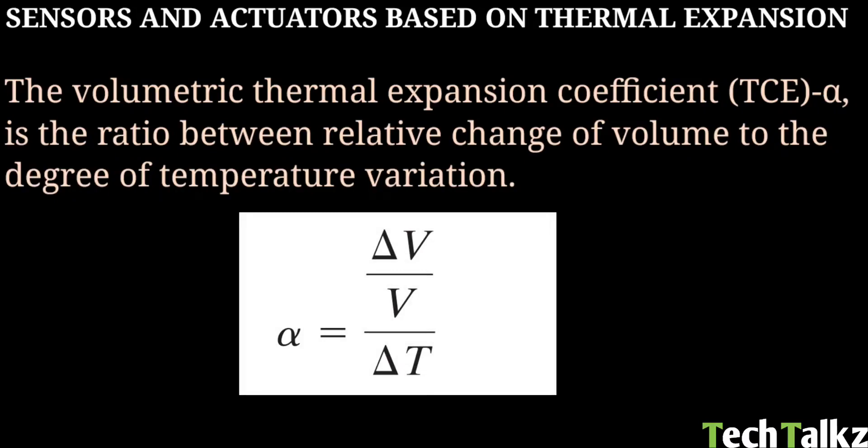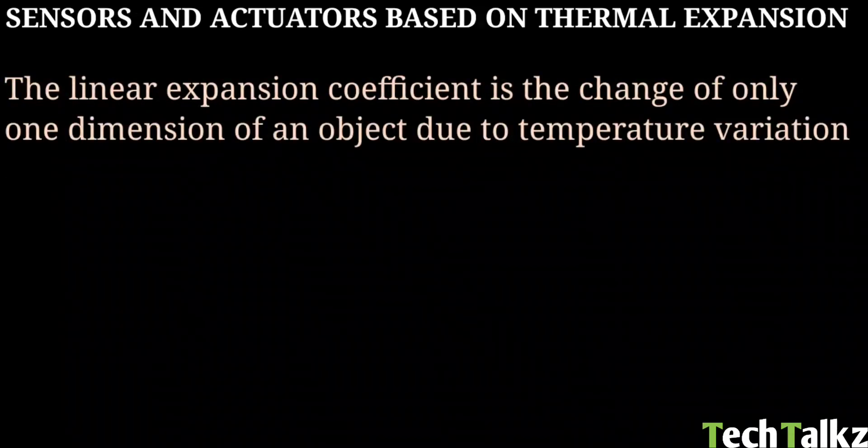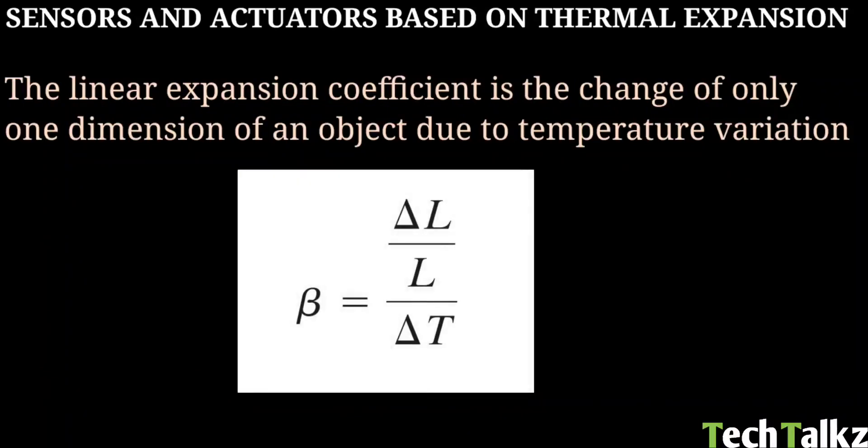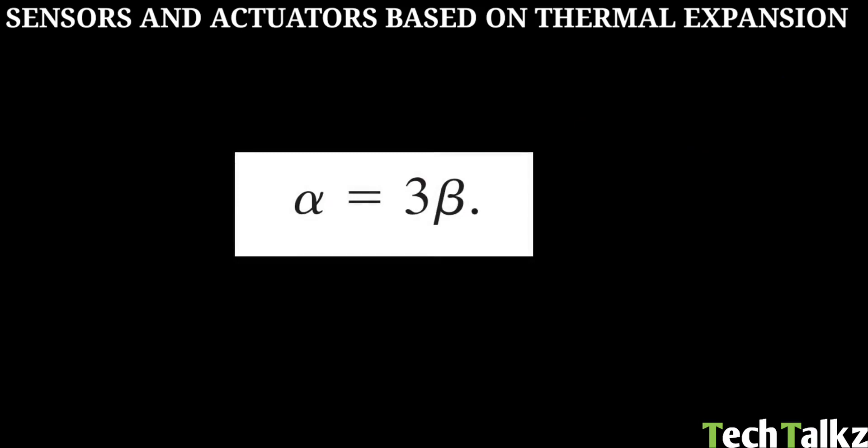The material constant or linear expansion coefficient is the change of only one dimension of an object due to the temperature variation. The relative change of length divided by the temperature variation, commonly denoted as beta. That is the linear expansion coefficient. For volumetric and linear expansion coefficients, the relation is that alpha is 3 times beta. Alpha is the volumetric thermal expansion coefficient and beta is the linear expansion coefficient.